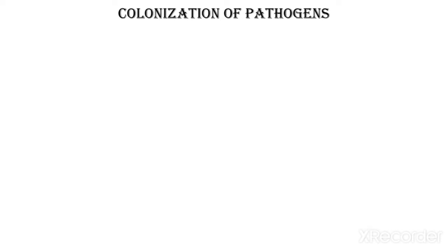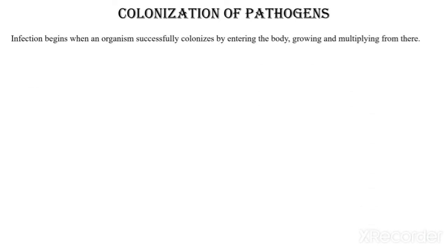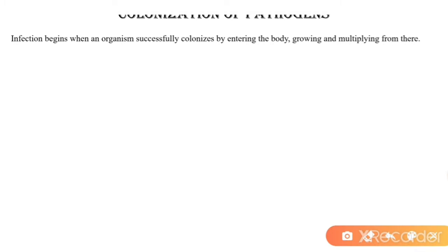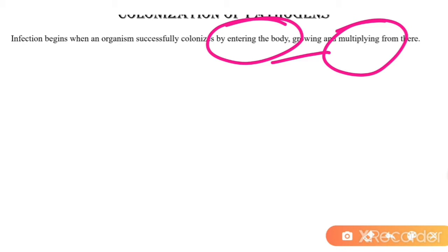Next point: colonization of pathogens. Infection begins when an organism successfully colonizes by entering the body, growing, and multiplying. When microorganisms or pathogens enter inside the body, after entering they will do their own growth and multiply. Once they grow well and multiply at that site, there is an infection.